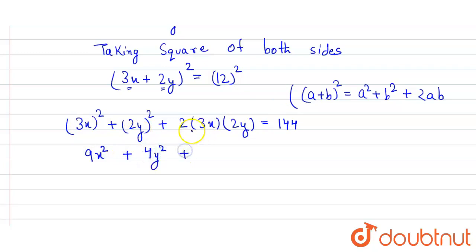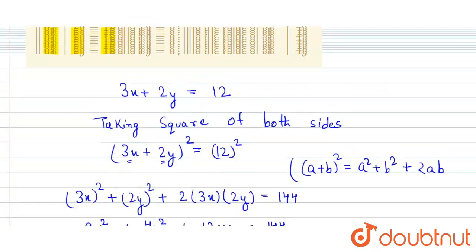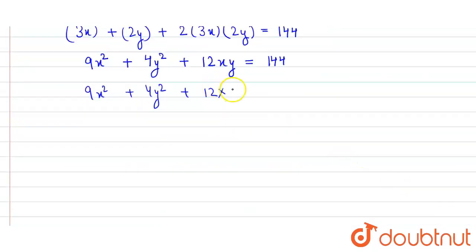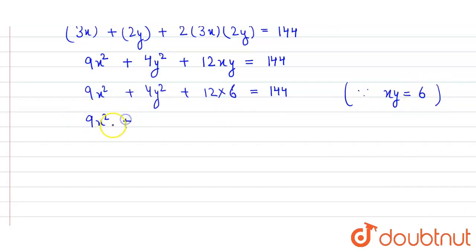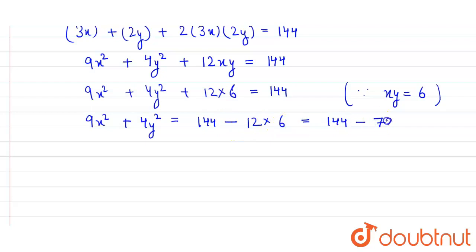So we have 9x squared plus 4y squared plus 2 into 3 into 2 into xy equals 144. Multiplying: 2 into 3 is 6, and 6 into 2 is 12, so we get 9x squared plus 4y squared plus 12xy equals 144. The value of xy is given as 6, so we put 12 into 6, which equals 72. Therefore, 9x squared plus 4y squared equals 144 minus 72, which gives us 72. That's our answer.